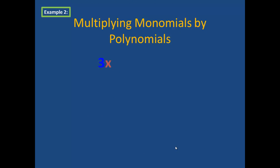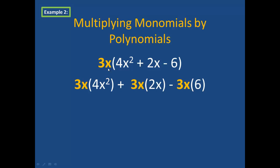In example 2, we are multiplying the monomial 3x by a trinomial 4x squared plus 2x minus 6. So I'm going to multiply 3x by each one of these three terms. So I have 3x times 4x squared, I bring down my addition sign, 3x times 2x, and then I bring down the subtraction sign and multiply 3x times 6.